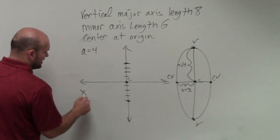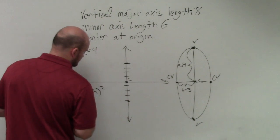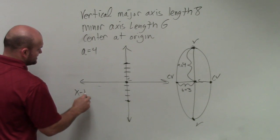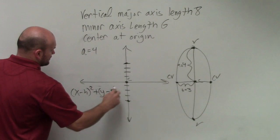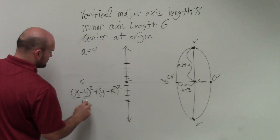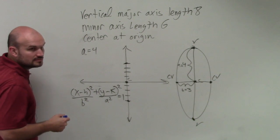So my equation is going to be x minus h squared plus y minus k squared. And then that's over b squared over a squared equals 1. Does everybody follow me?